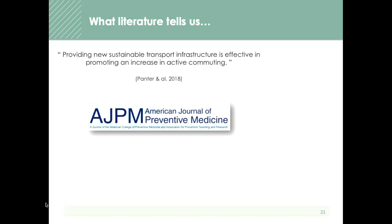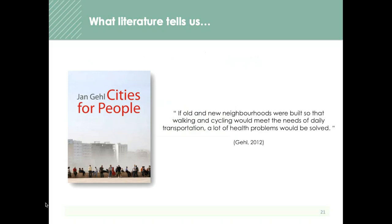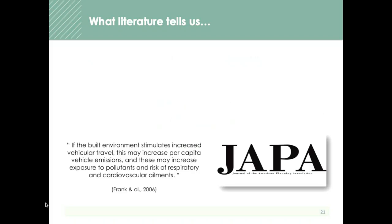These concepts are very well proven in the literature. The American Journal of Preventive Medicine tells us that providing new and sustainable transportation infrastructure is effective in creating an increase in active commuting. Jan Gehl, Danish urban planner, reports that if all new neighborhoods were built so that walking and cycling could meet the needs of daily transportation, a lot of health problems would be solved. And the Journal of the American Planning Association found that if the built environment stimulates increased vehicular travel, this may increase per capita vehicle emissions and increase exposure to pollutants and the risk of respiratory and cardiovascular ailments.